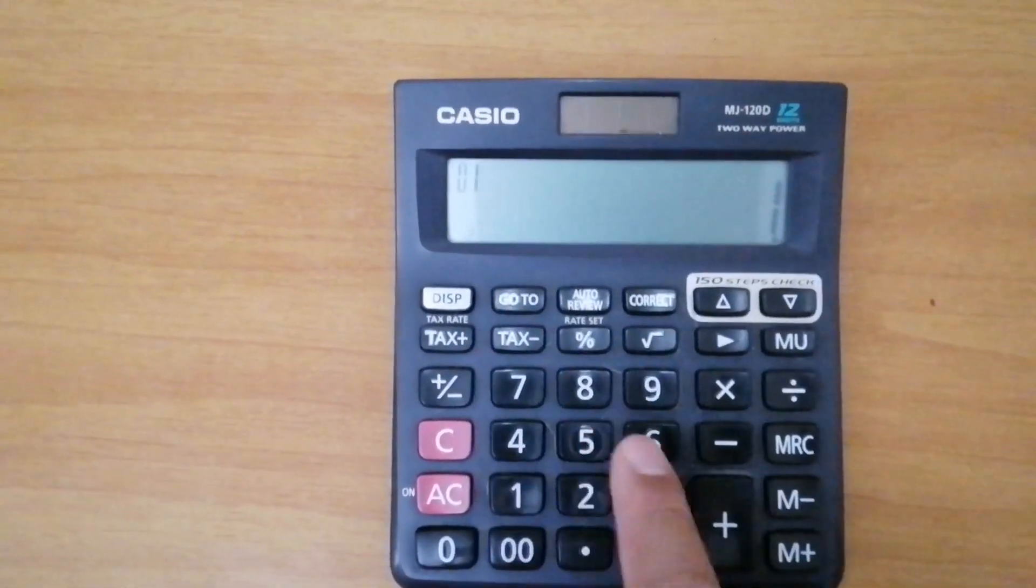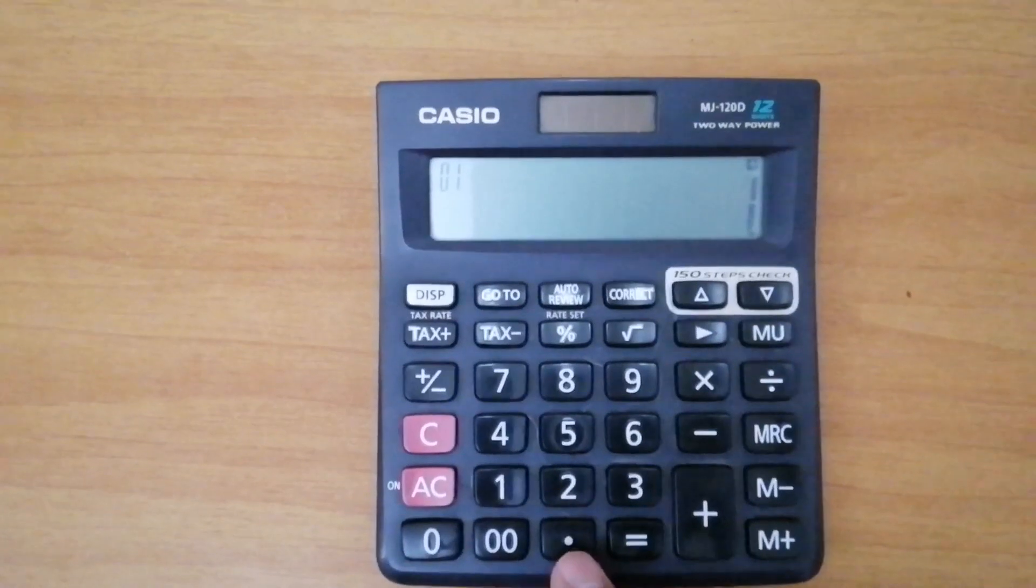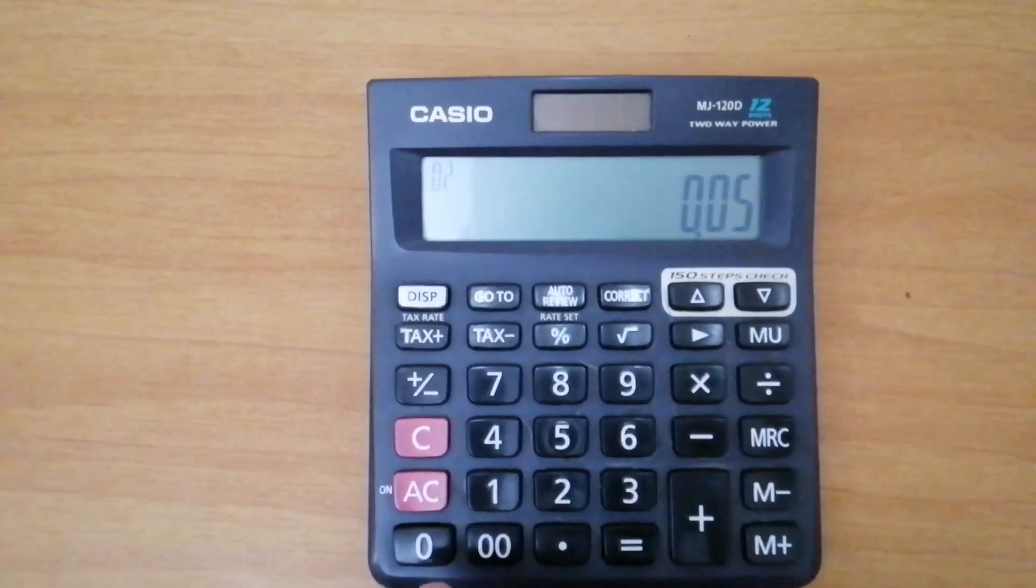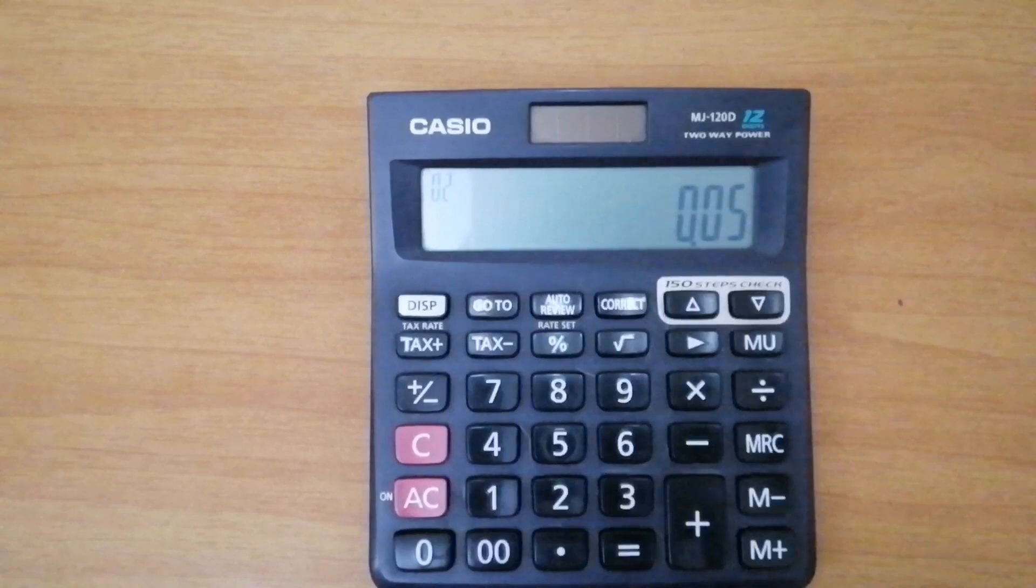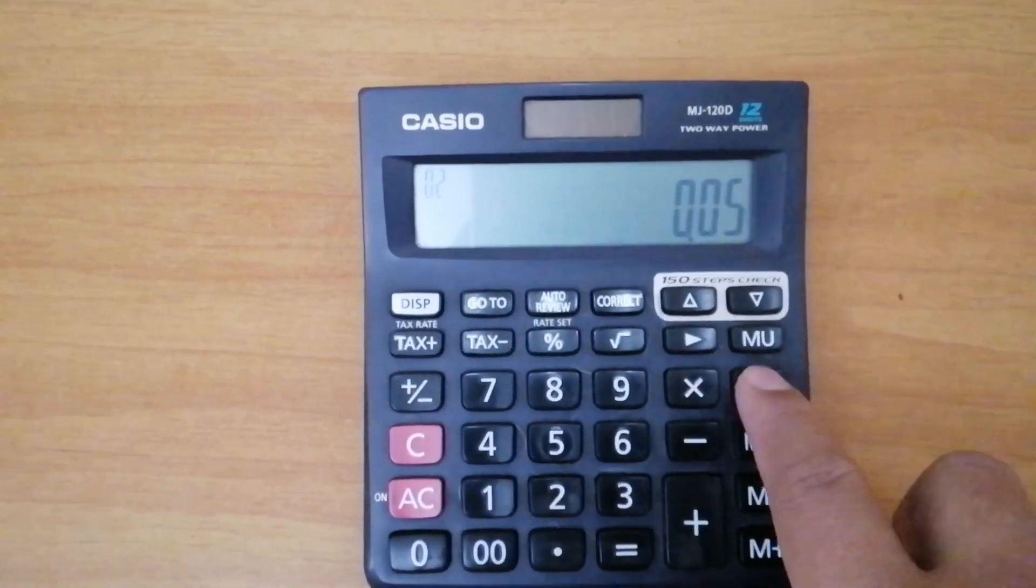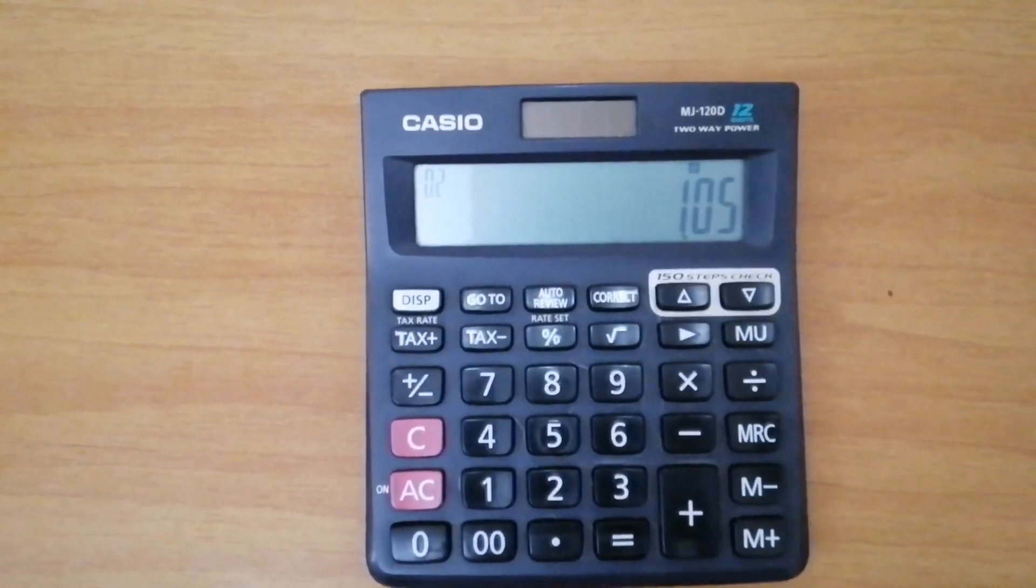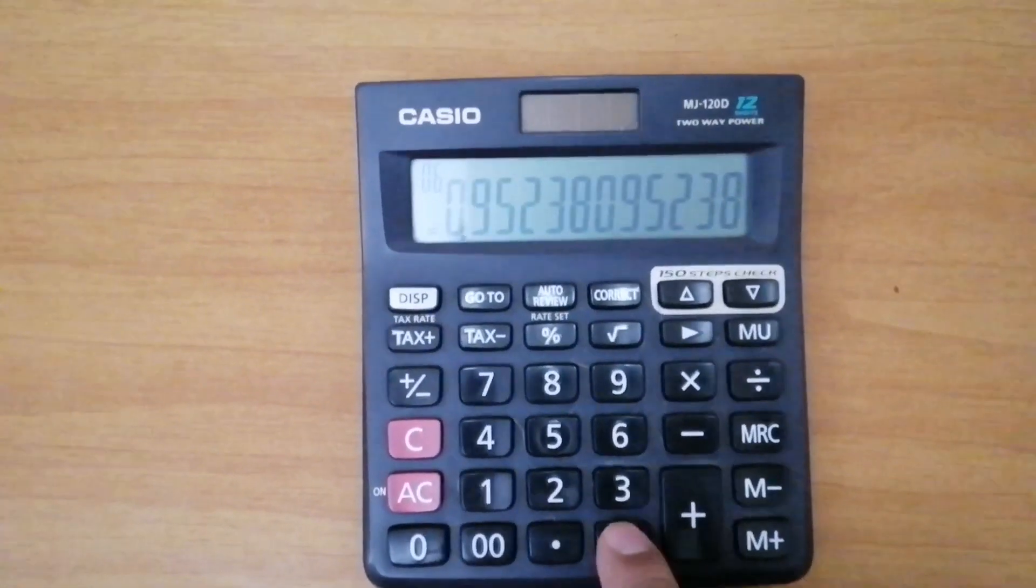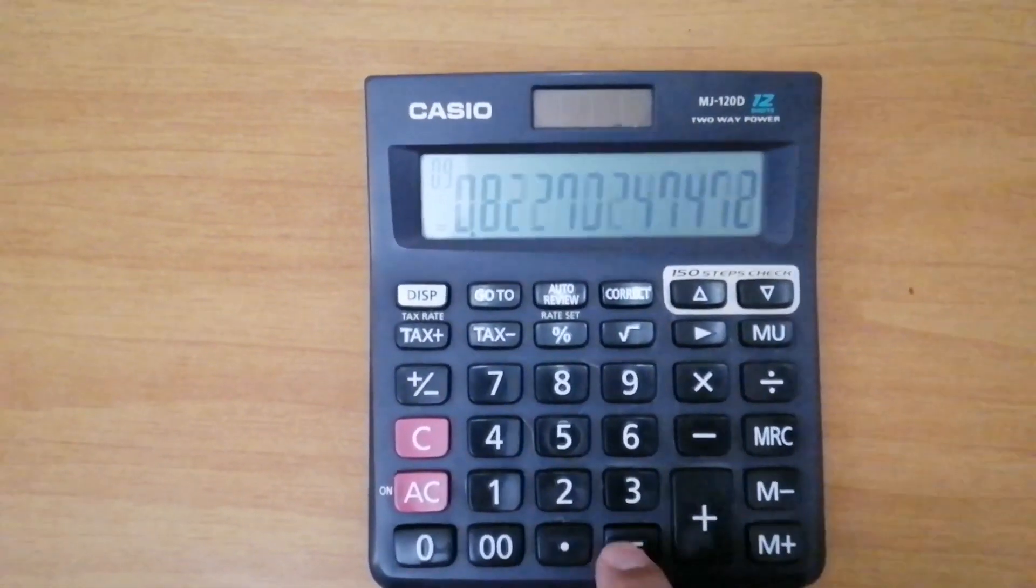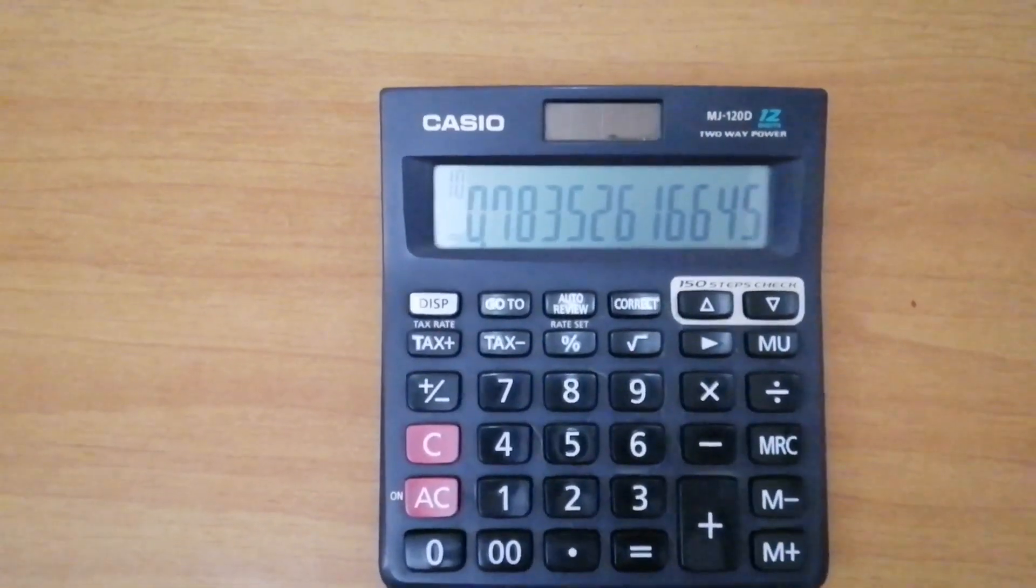Again, 1 plus 0.05 which is our rate. And then divide twice again, 1, 2. And then the period is 5, 1, 2, 3, 4, 5.